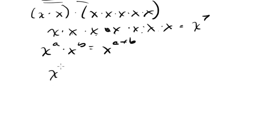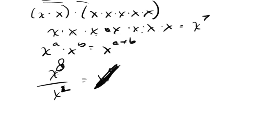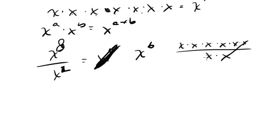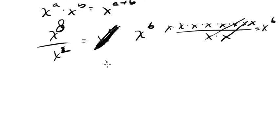For dividing — say x to the 8 divided by x to the 2 — just like with multiplying we added, when we divide we subtract. This is x to the 6th. The reason: you have 8 x's on top and 2 on the bottom, cancel out 2, and you're left with 6. The general formula is: x to the a over x to the b equals x to the a minus b.